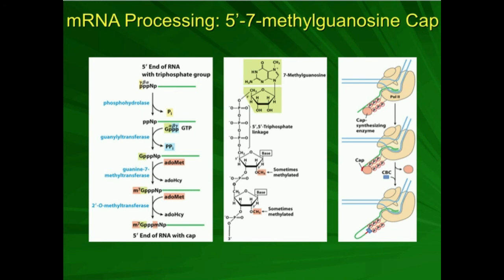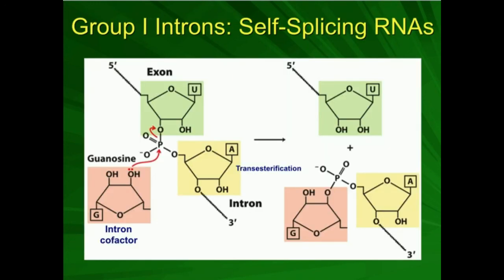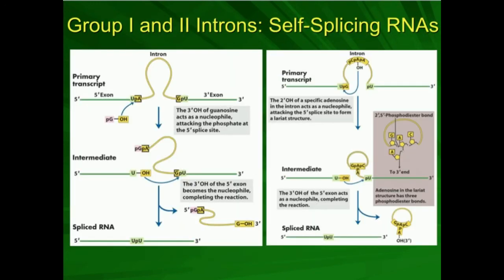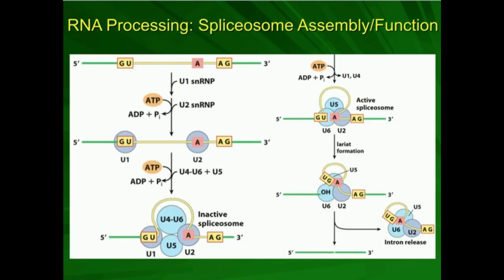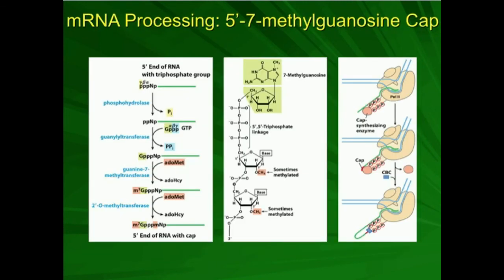After that, at the 3' end we're going to splice the mRNA — which we'll see in the next video, how we splice the mRNA and get the introns out and put the exons together. And once that's made, we're going to polyadenylate the 3' end. So that's how you make the 5' 7-methylguanosine cap. In the next video, we're going to go over RNA splicing, particularly of mRNA.